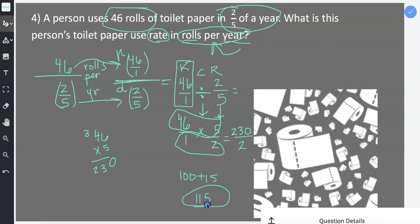So that means that this person uses 115 rolls per year. R for rolls, P for per, Y for years. 115 rolls per year.